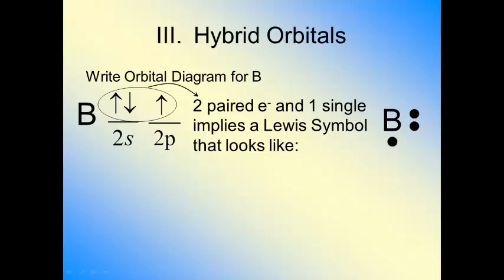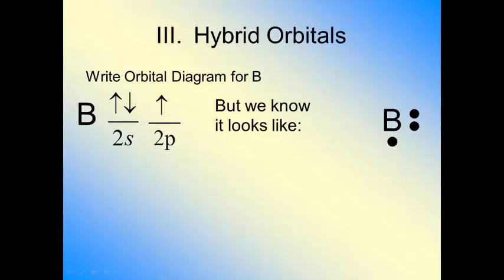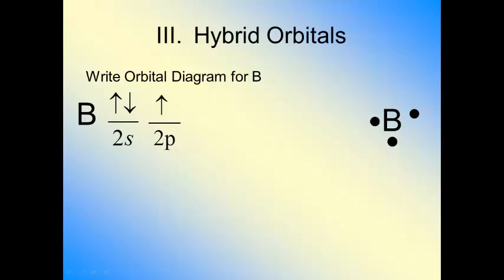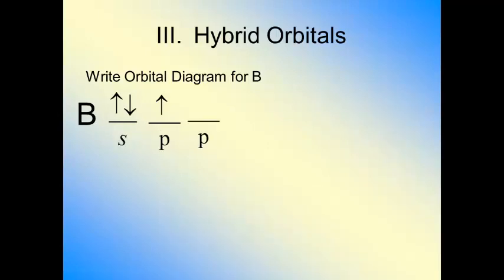You can only make bonds where there are single dots. So this electron that is paired should be over by itself on the other side. Let's see how this is all going to play out. We're going to do the same thing we did before. We're going to get rid of the fact that it's a second orbital and just focus on the s's and the p's.